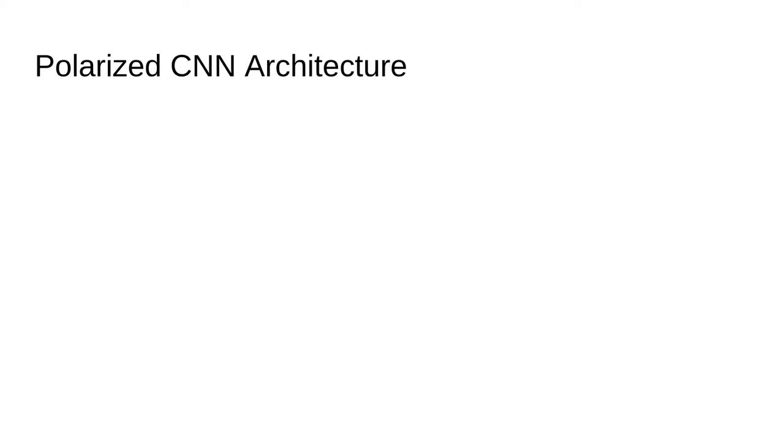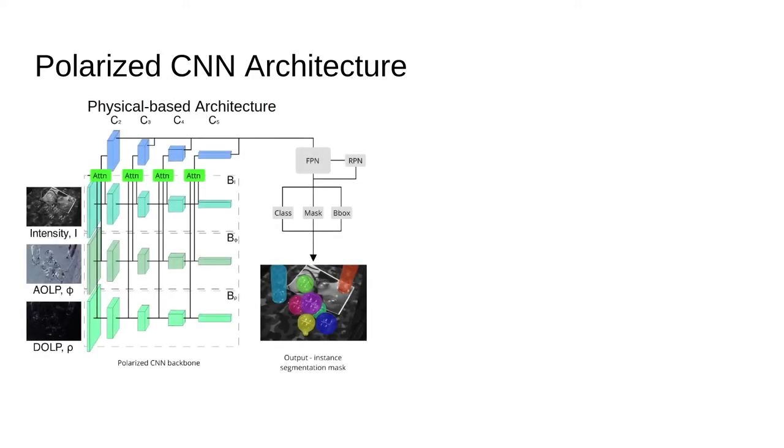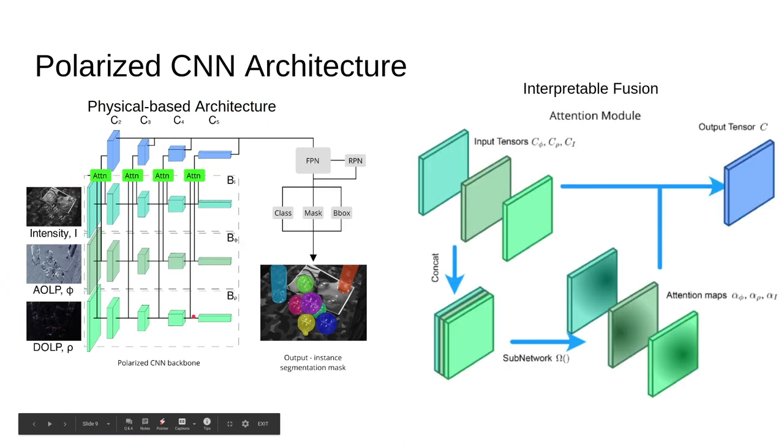Now let's talk about the architecture. So the first step of converting any deep network into a polarized CNN is using three input images instead of one and creating a multimodal fusion in the backbone. We then develop this novel attention fusion module which creates an attention mask per input allowing us to map inputs to outputs and interpret which inputs are being used for which outputs.